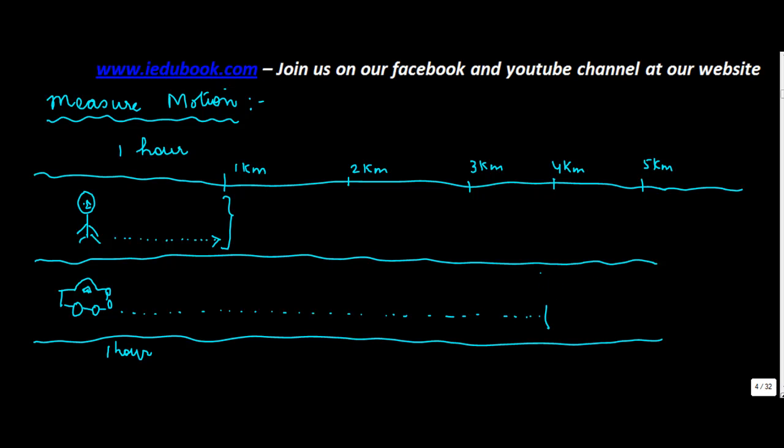Obviously this four kilometers is very less vis-a-vis the speed at which the car moves, but the idea is to explain the concept. So the car covered four kilometers in one hour and the man covered one kilometer in one hour.